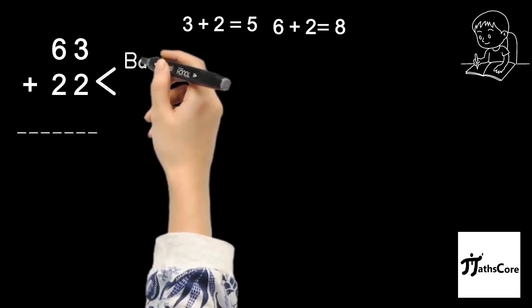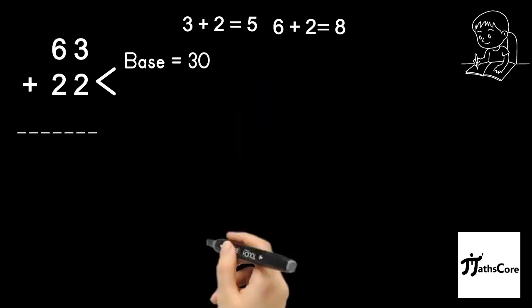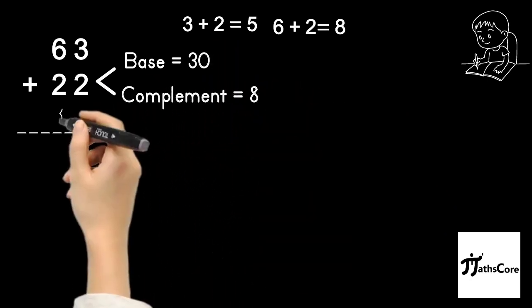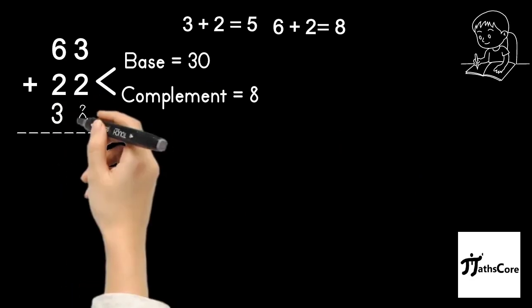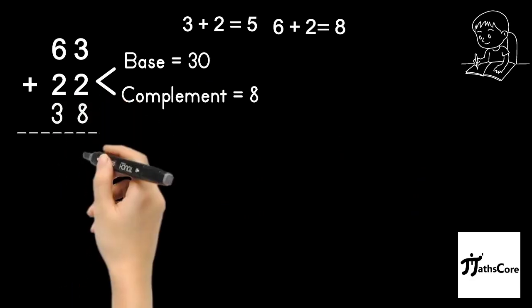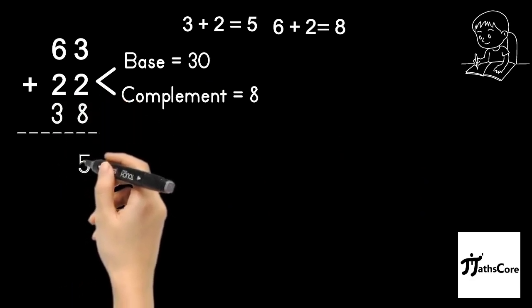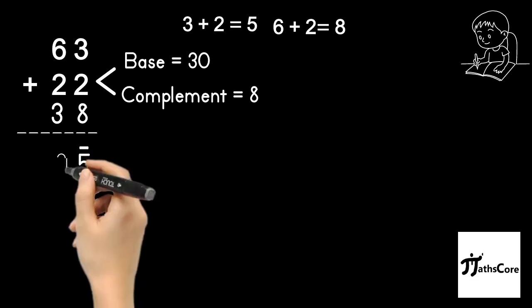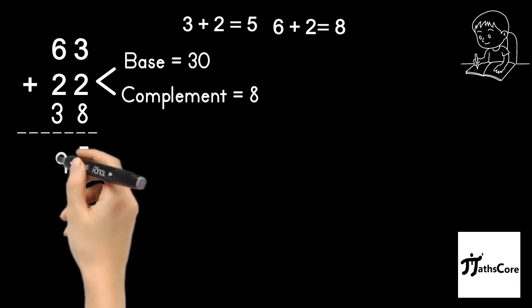Let us find out the base and complement for 22. So base is 30 and complement is 8. Write down 8 below 2 and 3 below 2. Now let us use the concept: add the base, less the complement.